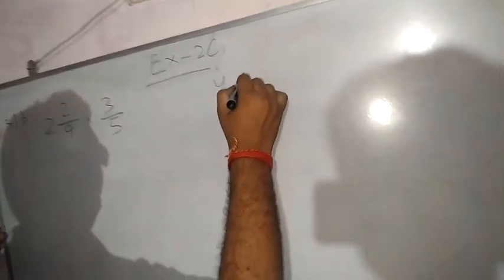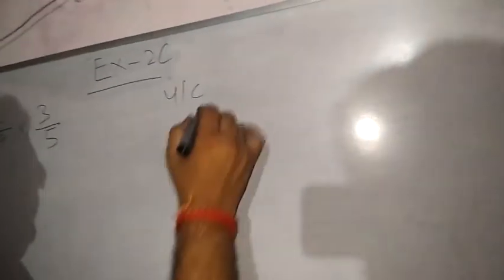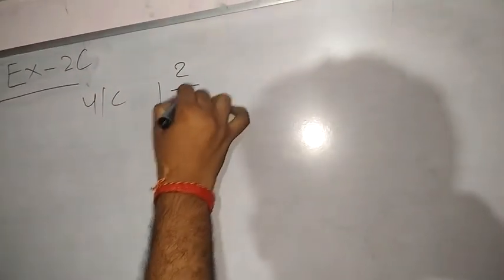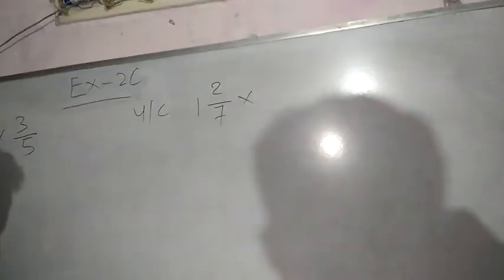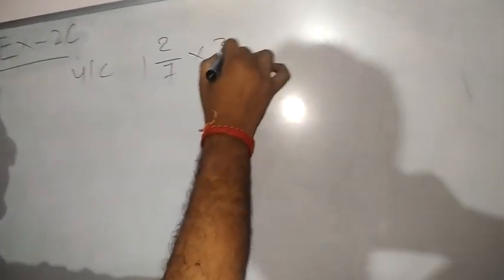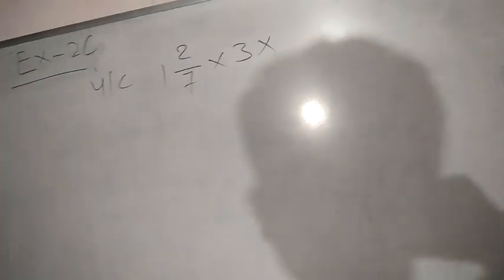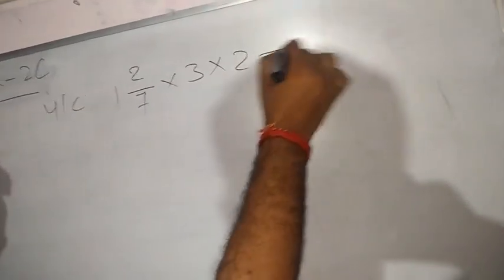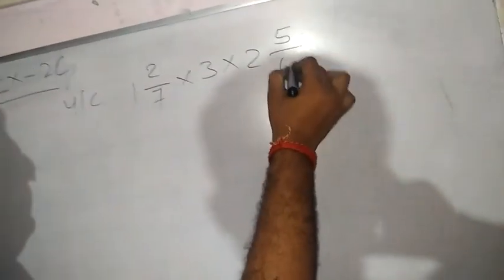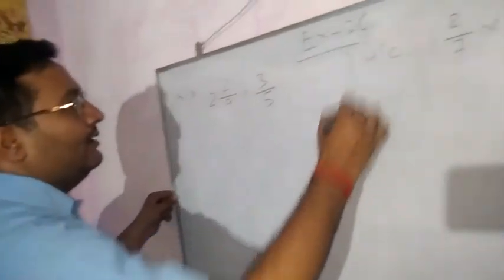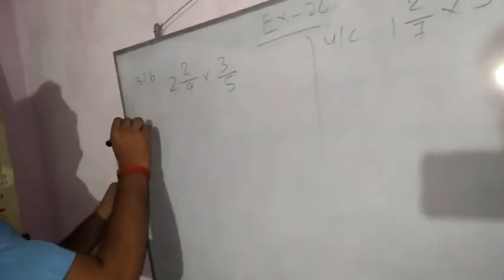And 4C is 1 whole 2/7 into 3 into 2 whole 5/8. Okay, now check how to solve it.